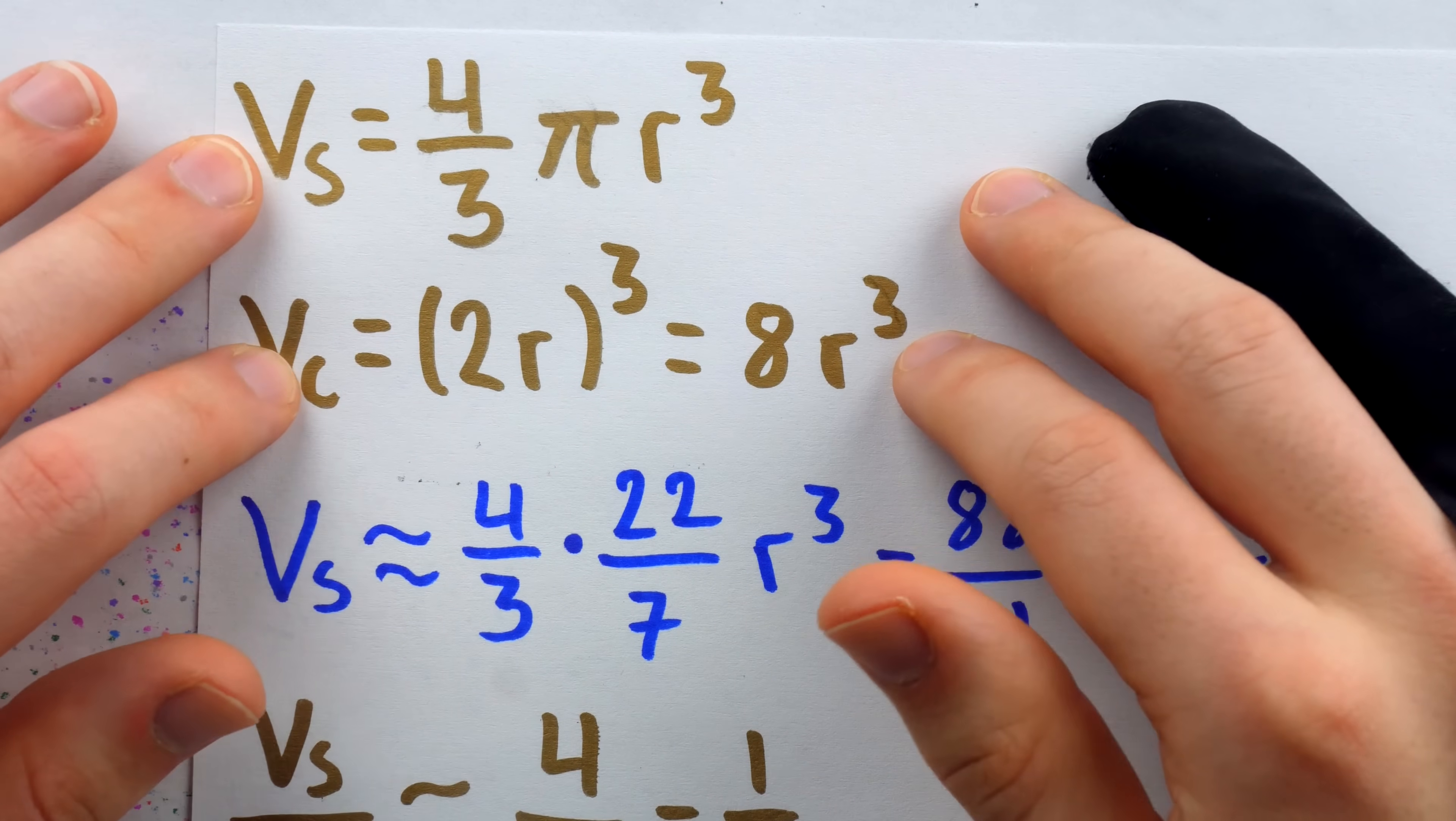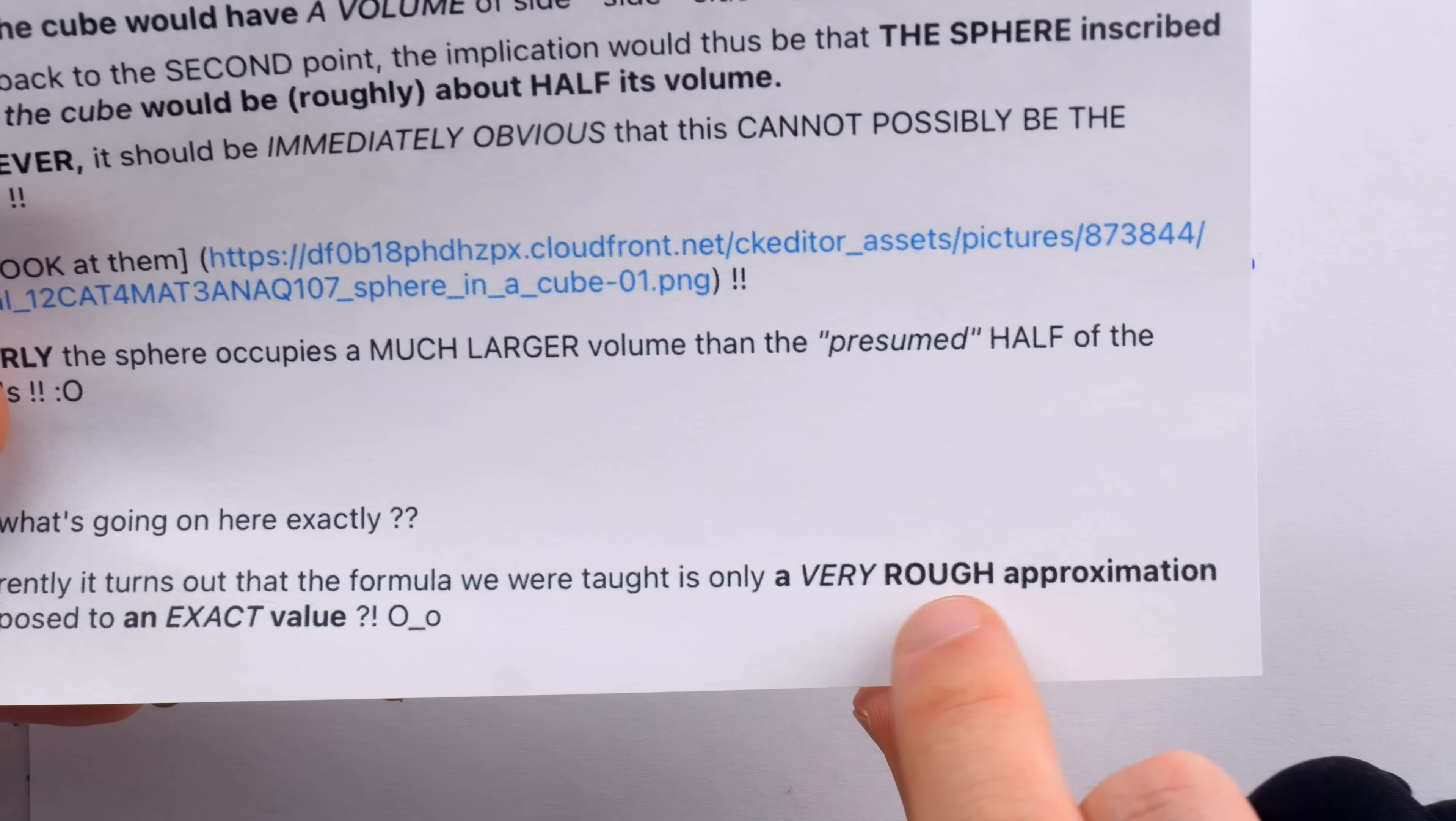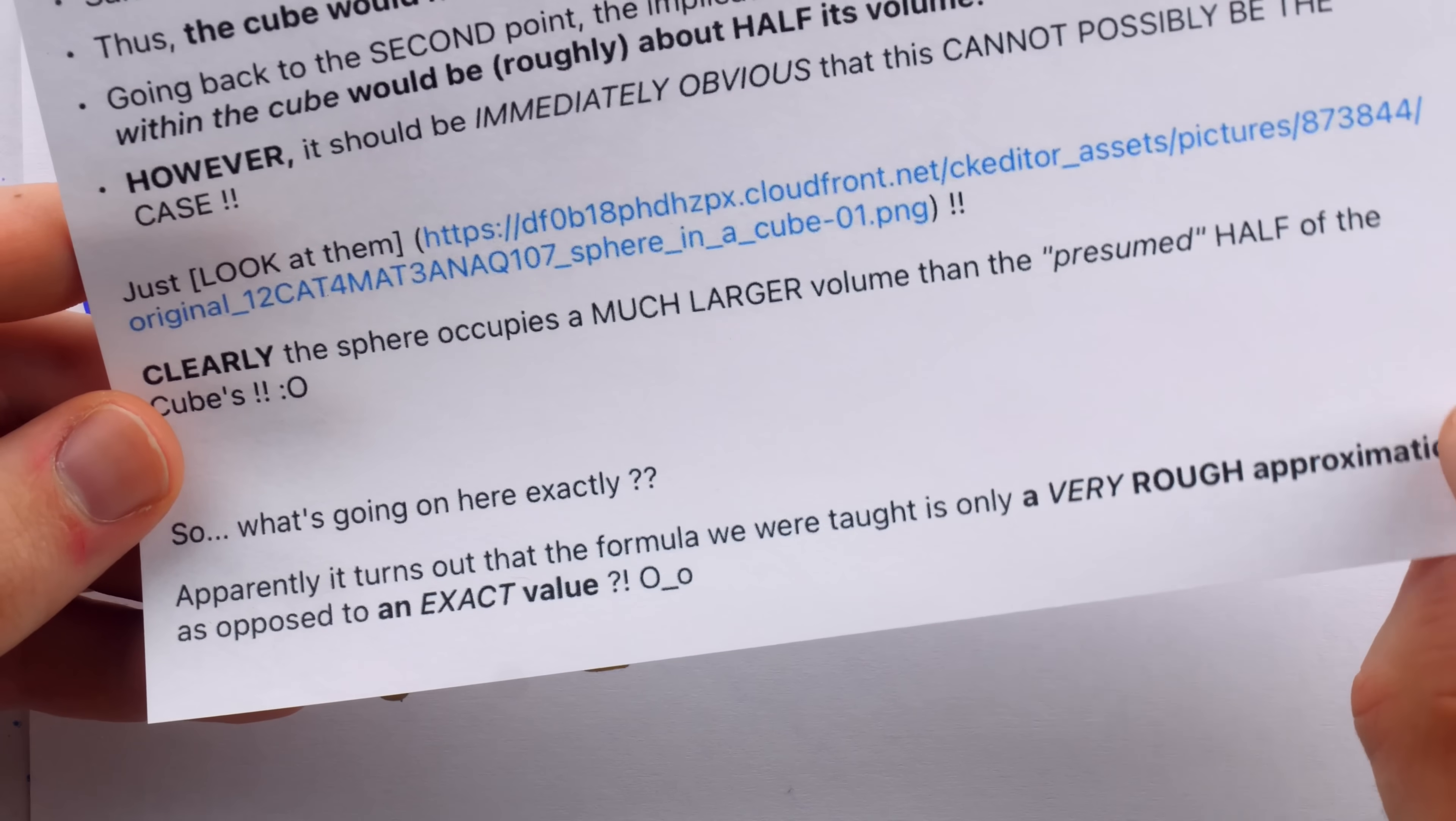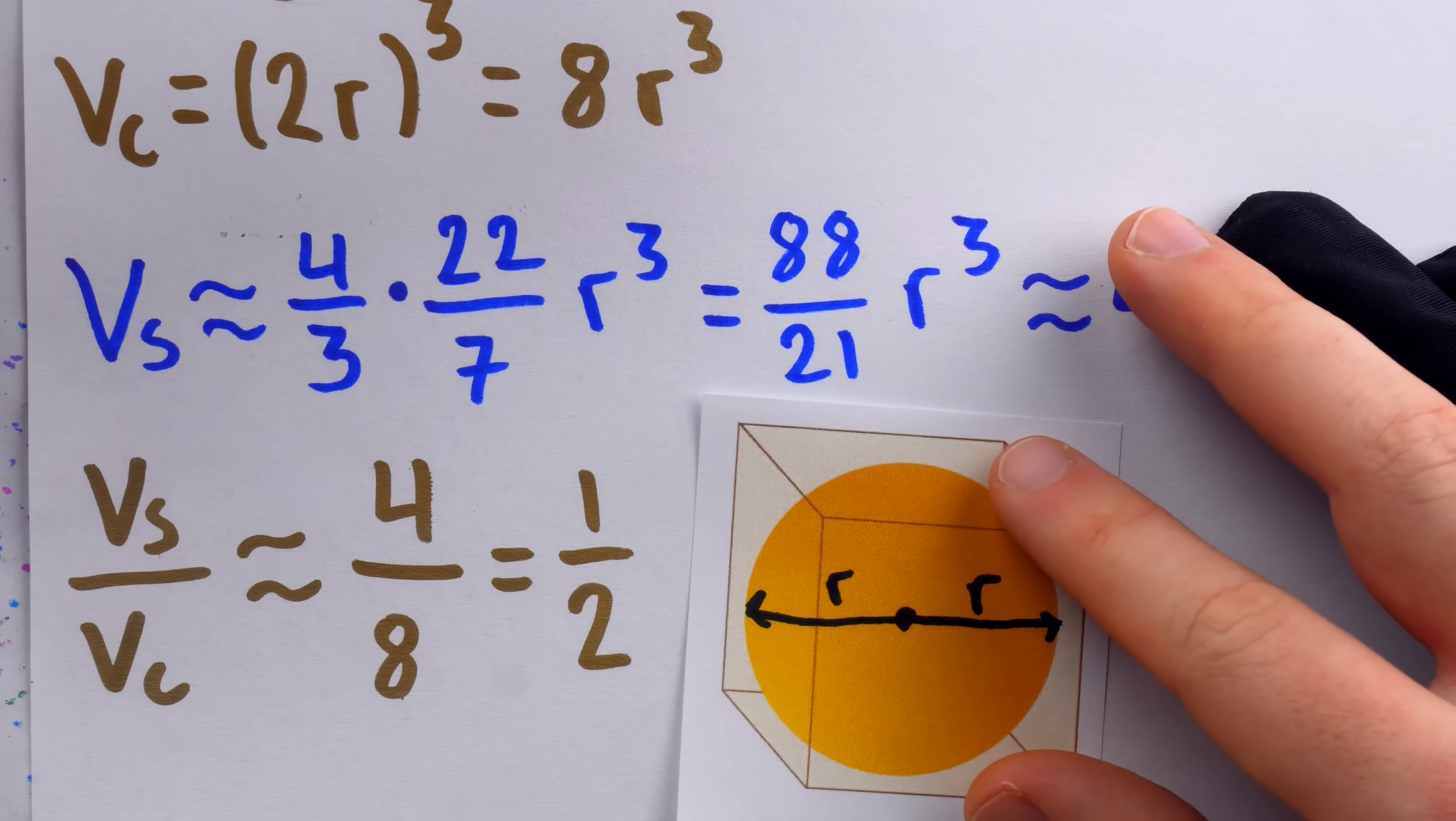The sphere is almost taking up the whole thing. There's just some little nooks and crannies here that are still empty. So, obviously, these formulas are incorrect. The formulas have to be wrong, because all of the math we did here was fine. So the formulas we've been taught, apparently, it turns out they were just rough approximations. Those formulas don't actually give the exact values. Otherwise, we wouldn't have this contradiction.